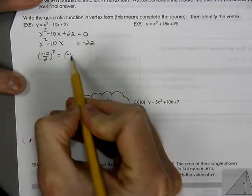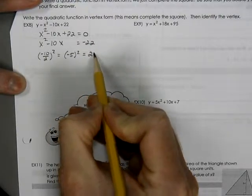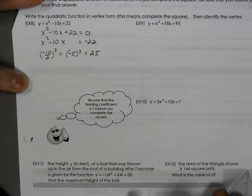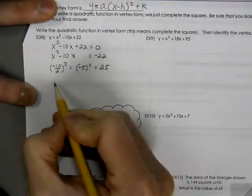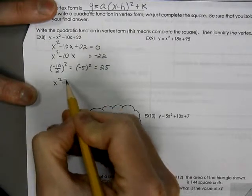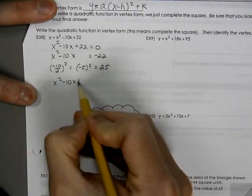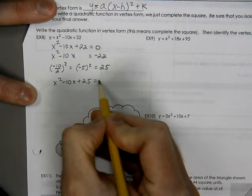So that becomes negative 5, and we'll square that, which is 25. We take the 25, and we add it to both sides of our equal sign.